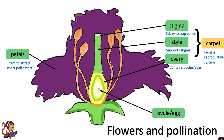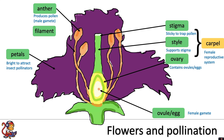The ovule or egg is contained within the ovary and this is the female gamete, the female sex cell. There is an anther and this produces the pollen, the male gamete, and the filament to support the anther. Together these make up the stamen, which is the male reproductive system.